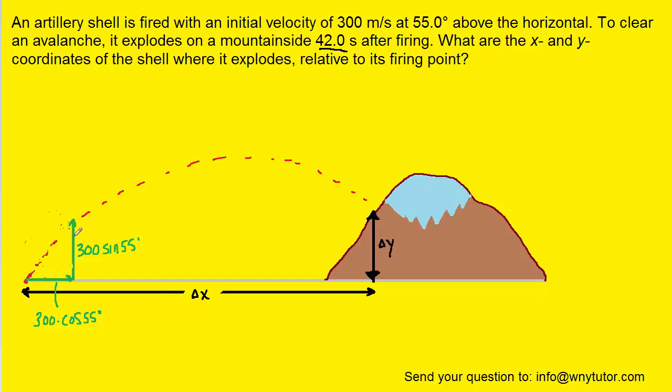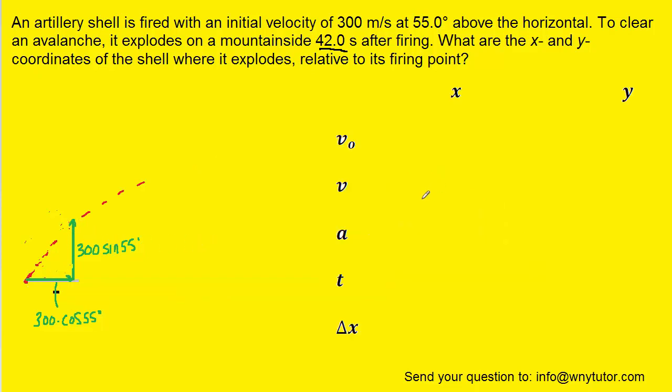Now that the velocity is broken into its components, we can introduce a projectile motion table that will help us organize the information. The initial velocity in the x direction was noted as 300 cos 55, and in the y direction, it was 300 sine 55.